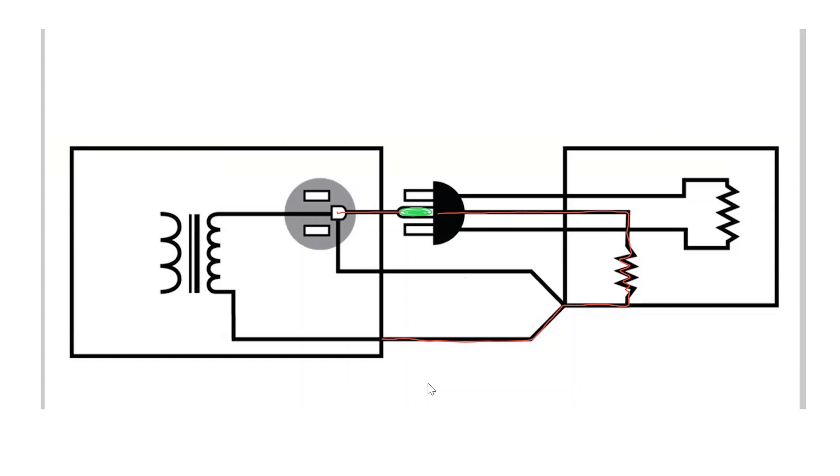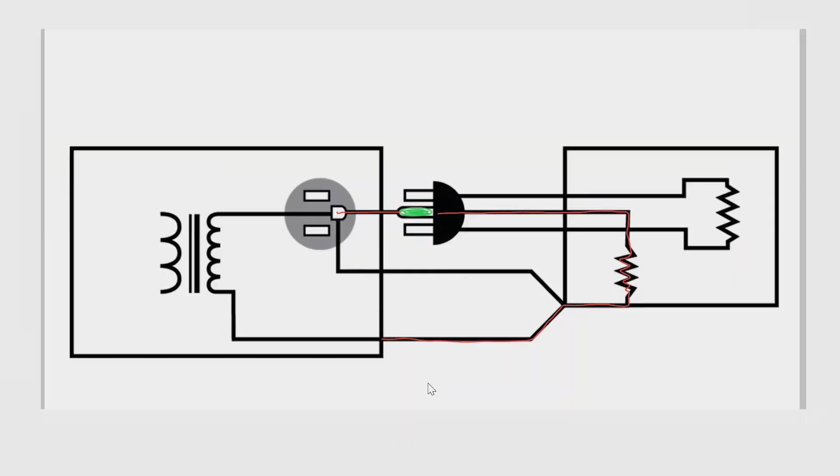And that's what the ground continuity test is all about: just to verify that a continuous ground connection exists on our products. A few other things to know about the ground continuity test are that it's usually required as a routine production line test and is often performed along with the high pot test to ensure ground continuity.